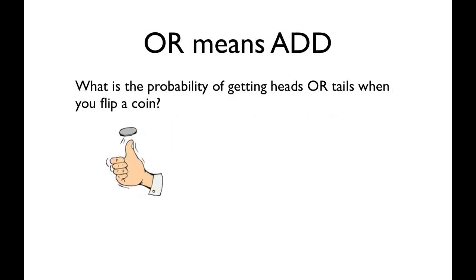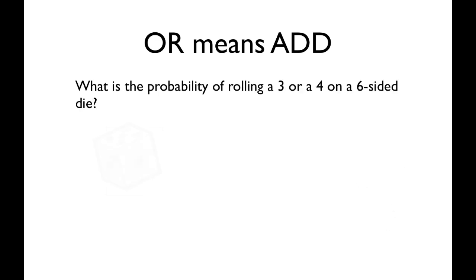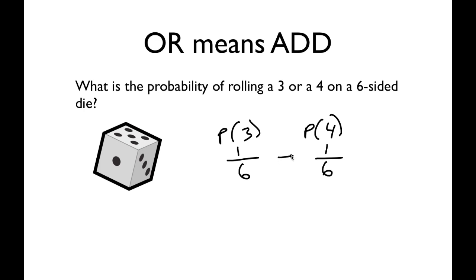What about the probability of getting heads or tails when you flip a coin? When you see the word 'or' — the union — you add. The probability of heads is 1/2, the probability of tails is 1/2, and that 'or' means add them together — so the probability of getting heads or tails is 1. What about the probability of rolling a 3 or a 4 on a six-sided die? The probability of rolling a 3 is 1/6, and the probability of rolling a 4 is also 1/6. Since either one is acceptable, I add them: 2/6, or 1/3.